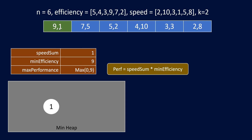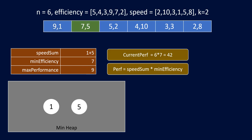Taking the first element with efficiency 9 and speed 1: speed sum becomes 1, and we store speed 1 in the min-heap. Performance is 1 multiplied by 9, which is 9, so max performance becomes 9. Moving to the second engineer with speed 5: speed sum becomes 6, efficiency becomes 7 (the minimum now). Current performance is 6 multiplied by 7, which is 42 — higher than before, so we update max performance to 42.